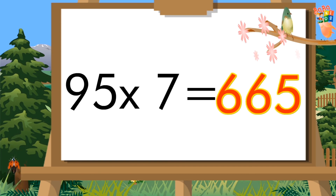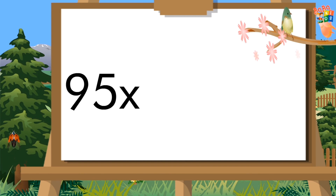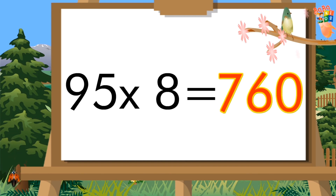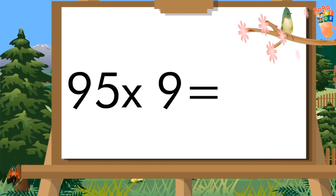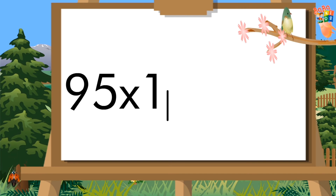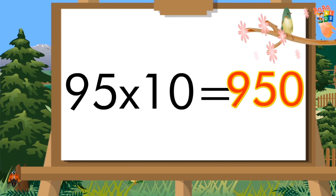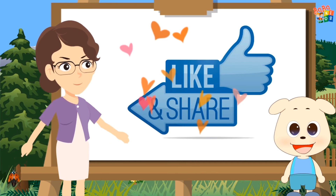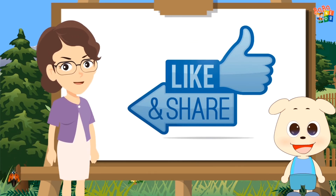Ninety-five sevens are six hundred sixty-five. Ninety-five eights are seven hundred sixty. Ninety-five nines are eight hundred fifty-five. Ninety-five tens are nine hundred fifty. Please like and subscribe my channel. Thank you.